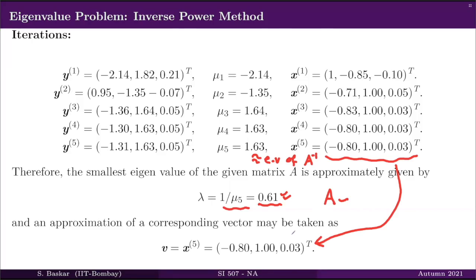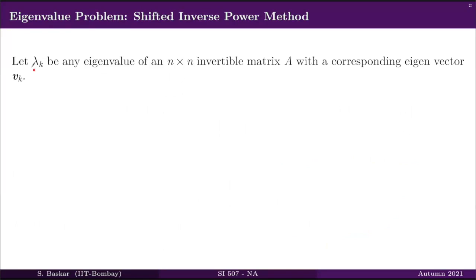This is the idea of the inverse power method. Once you understand this idea, you can go on to obtain any other eigenvalue of a given matrix A, which is not necessarily the dominant eigenvalue or the smallest eigenvalue. For this, we have another idea called the shifted inverse power method, which can be used to obtain any eigenvalue of a given matrix A.